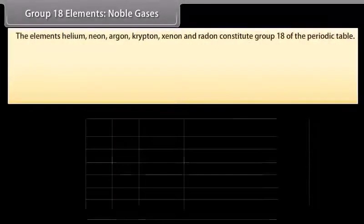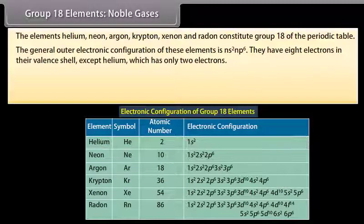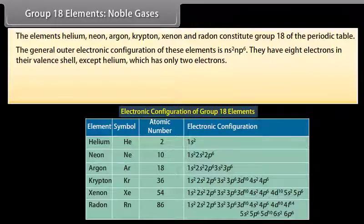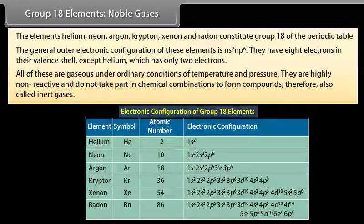Group 18 elements — noble gases: The elements helium, neon, argon, krypton, xenon and radon constitute group 18 of the periodic table. The general outer electronic configuration is NS²NP⁶; they have 8 electrons in their valence shell, except helium which has only 2. All are gaseous under ordinary conditions. They are highly non-reactive and do not take part in chemical combinations, and are therefore also called inert gases.